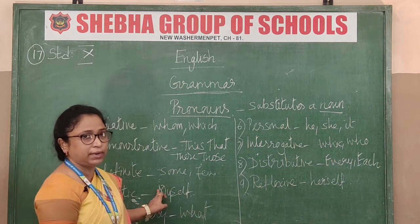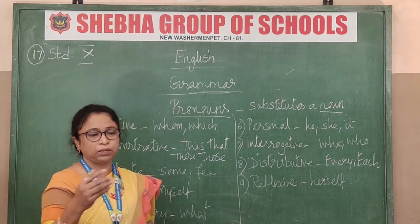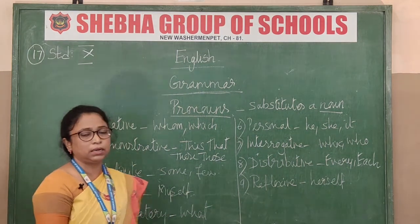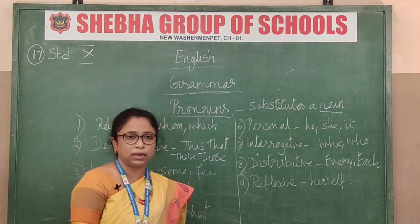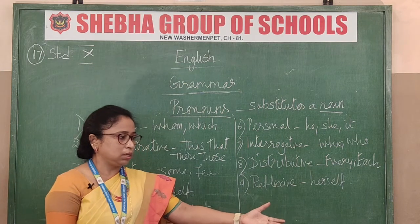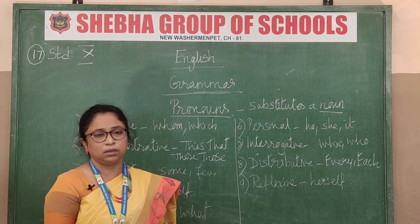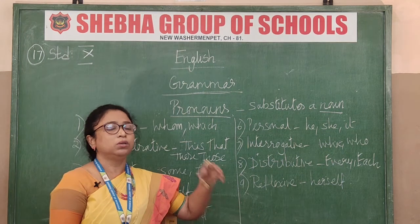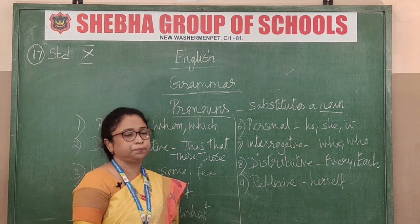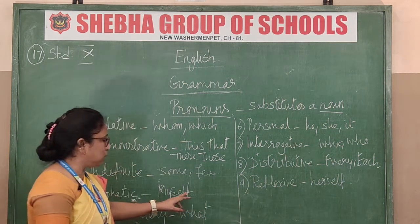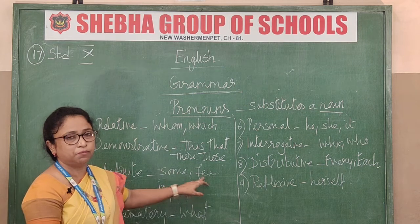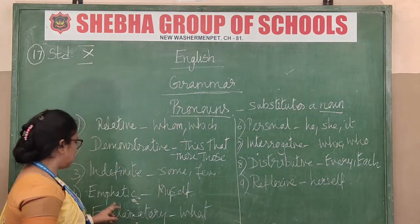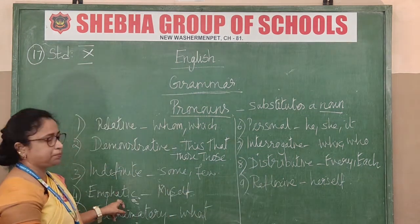The third type is the indefinite pronoun. Here you are not mentioning a particular person or thing. For example, 'Some children are naughty in the class' or 'Some fruits in the basket are very tasty' — you are not specifying which fruits. Words like 'some,' 'few,' and 'any' are indefinite pronouns.